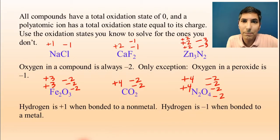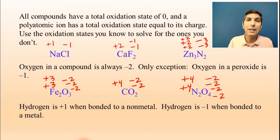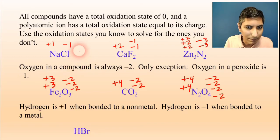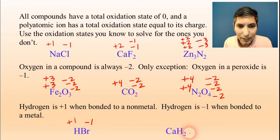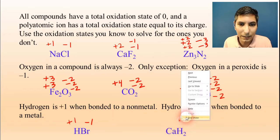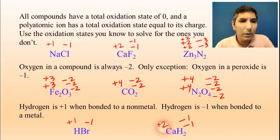Generally speaking, hydrogen is going to be positive one when it's bonded to a nonmetal — that's about 95% of cases. Very occasionally, hydrogen will be bonded to a metal in what's called a hydride ion, and in that case hydrogen is negative one. In HBr, hydrogen is bonded to a nonmetal, so it's positive one — meaning bromine has to be negative one. In calcium hydride, hydrogen is bonded to a metal, so H is negative one; we have two of those for a total of negative two, meaning calcium is positive two.